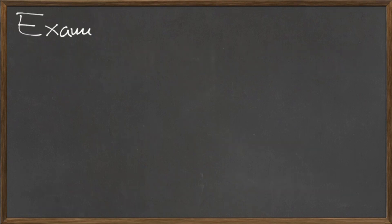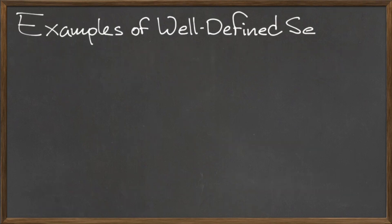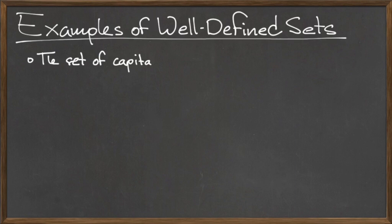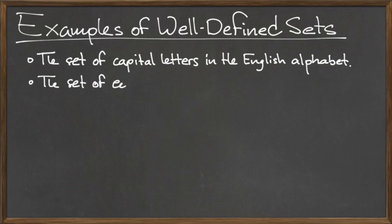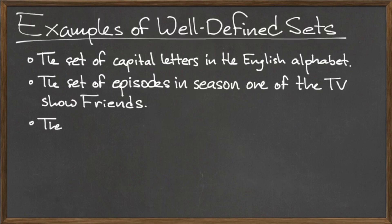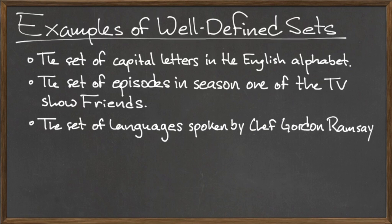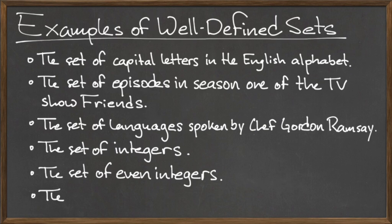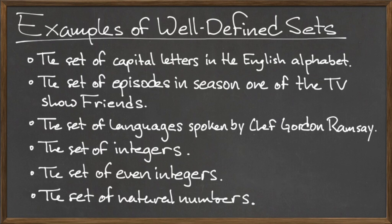The following are all examples of well-defined sets, since we can easily describe these sets with a sentence, and with the proper information, we could list the elements of these sets and determine the number of elements there are.